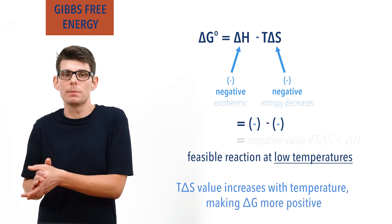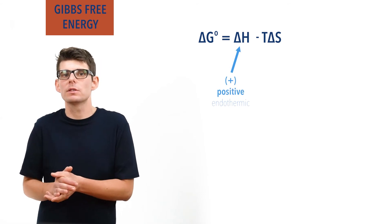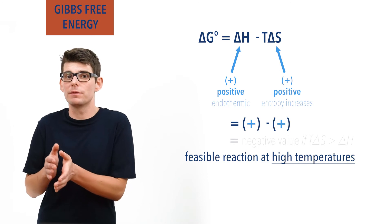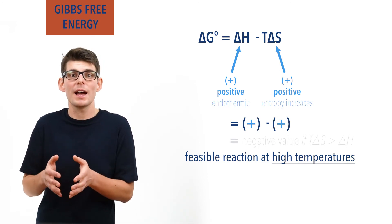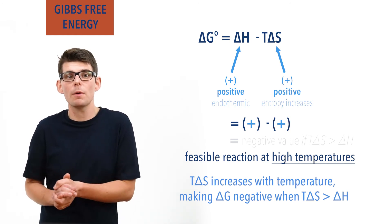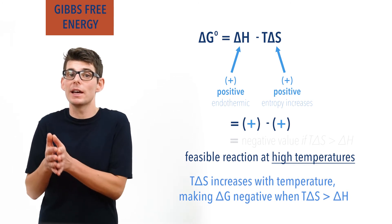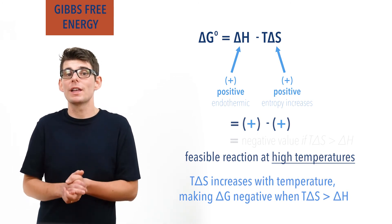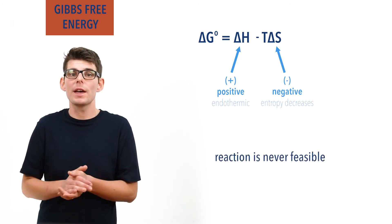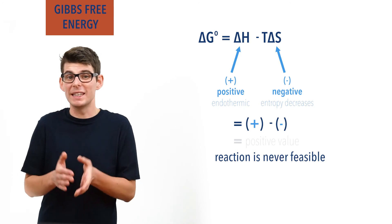A positive Gibbs free energy change means an unfeasible reaction. If a reaction has a positive enthalpy change (endothermic) and a positive entropy change, the reaction can be feasible but only at high temperatures — as T delta S gets bigger with temperature and will eventually exceed the positive delta H, making Gibbs free energy change negative. If a reaction has a positive enthalpy change and a negative entropy change, the reaction is never feasible, as the Gibbs free energy change will always be greater than zero — a positive value minus a negative number gives a more positive value.